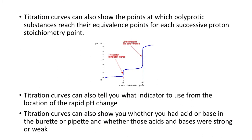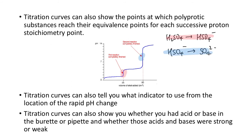Titration curves can also show the points at which polyprotic substances reach the equivalence point for each successive proton. For example, H₂SO₄ first ionizes to HSO₄⁻, then HSO₄⁻ ionizes to SO₄²⁻. So you have an equivalence point for the first ionization and an equivalence point for the second. Generally, you take the last equivalence point for the complete reaction stoichiometry, rather than the first.